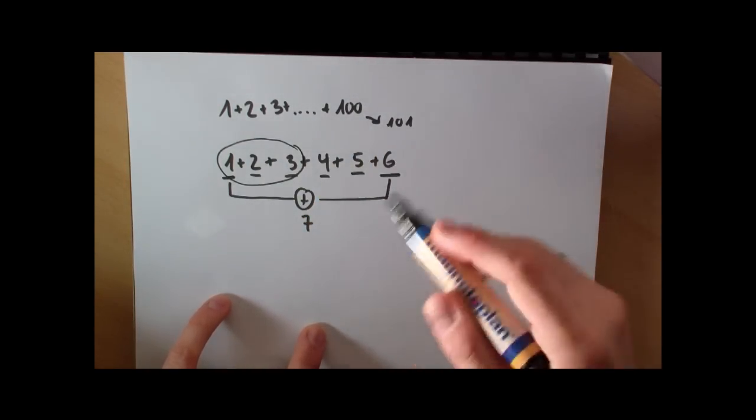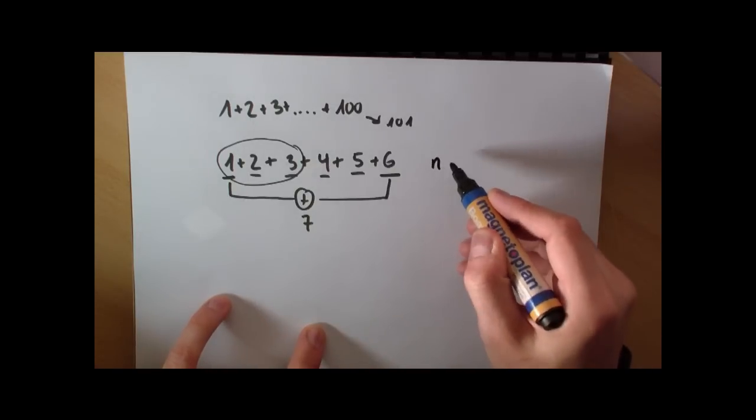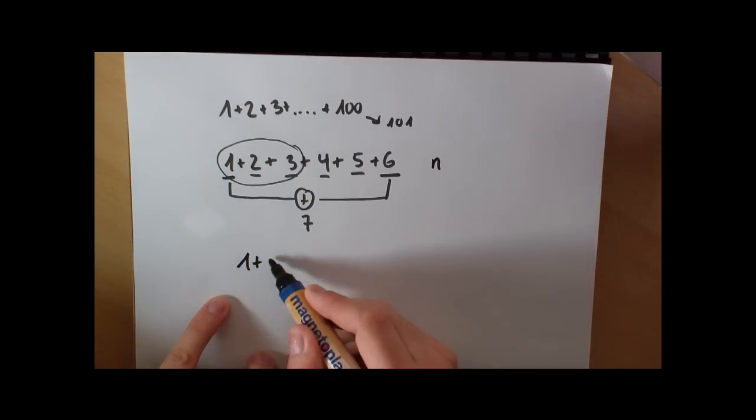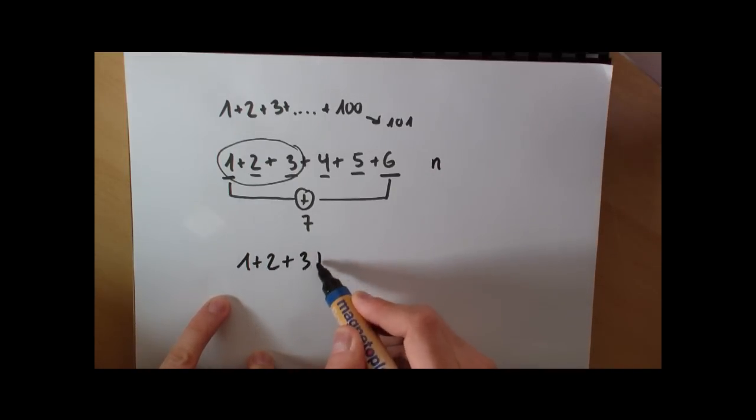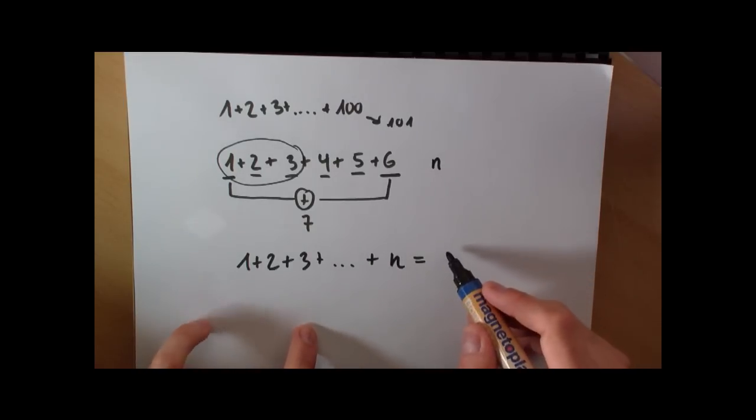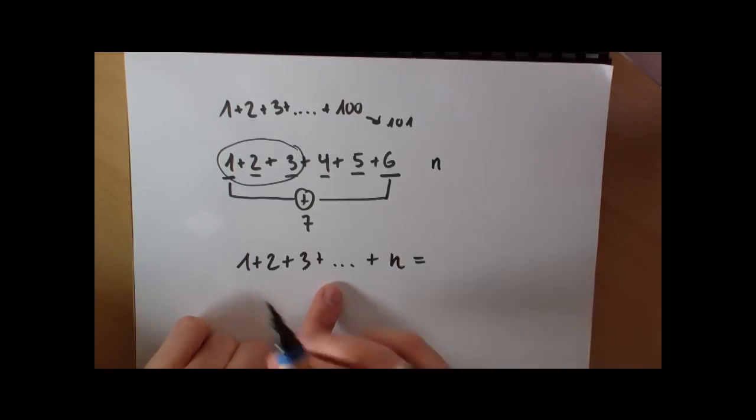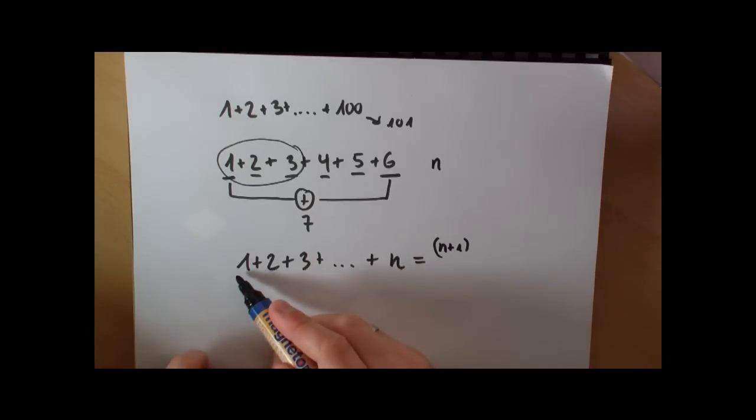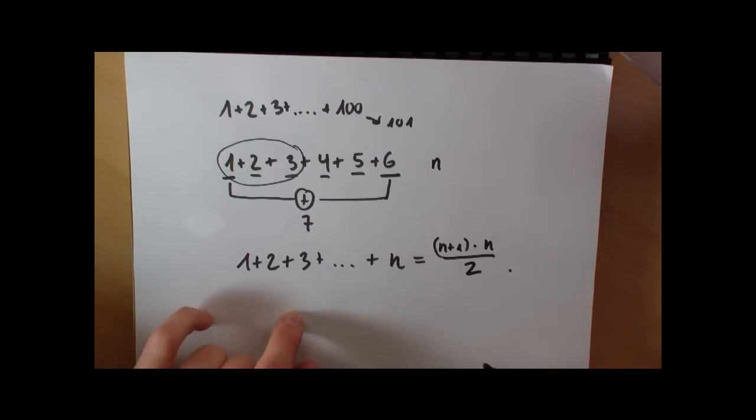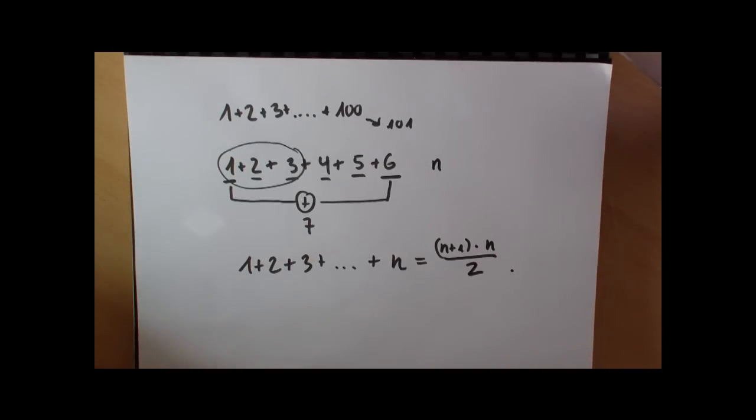If you just continue thinking about this, you will end up having this formula: if n is your last number, then the total sum is n+1, so the last term plus the first, multiplied with n/2. And this is called the small Gauss.